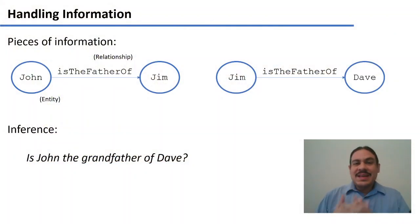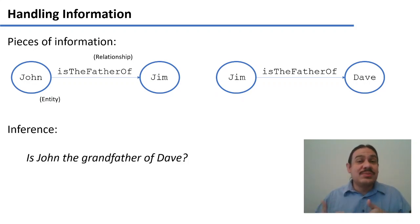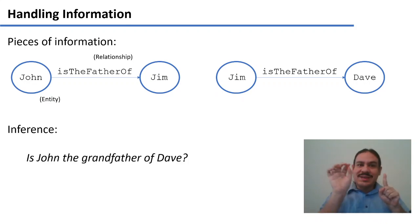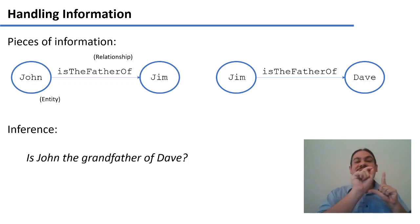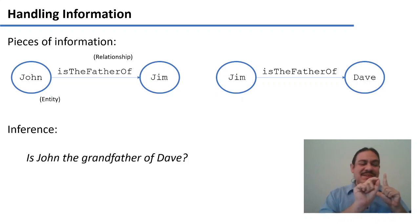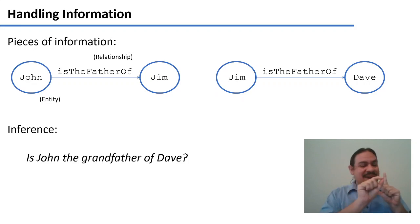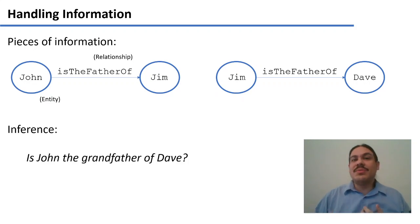In the last few videos, we've been looking at information and how to store it. We have relational databases where you have an entity like person, and then the entity has some attributes like 'father of' with the value Jim, or name John. So there's a particular instance of the entity person which is John, and it has 'is the father of Jim.' There's another entity called Jim, and it has the attribute 'is the father of Dave.' That would be a relational database.